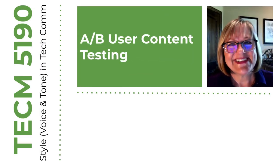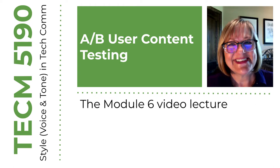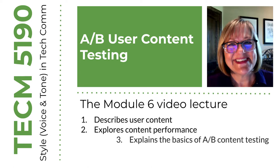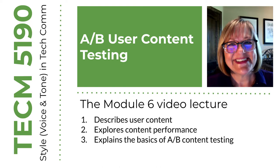Welcome back. This Module 6 lecture covers three topics, all related to A-B testing of user content. First, I'll describe what I mean by user content. Second, I'll explore how non-traditional publishers measure the performance of their content. And third, I'll explain the basics of A-B content testing. I'm bringing this information to you now because you're starting your own A-B testing project in the course.